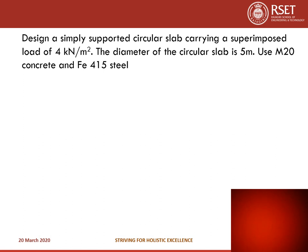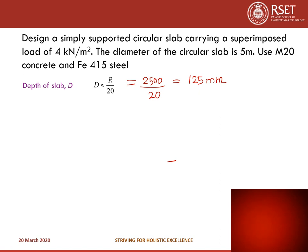Problem: Design a simply supported circular slab carrying a superimposed load of 4 kN/m², with a diameter of 5 m, using M20 concrete and Fe415 steel. The first step is to fix the depth of the slab, approximately as R/20, where R is the radius. So the radius is 2500 mm divided by 20, giving 125 mm. Provide depth of slab as 125 mm.